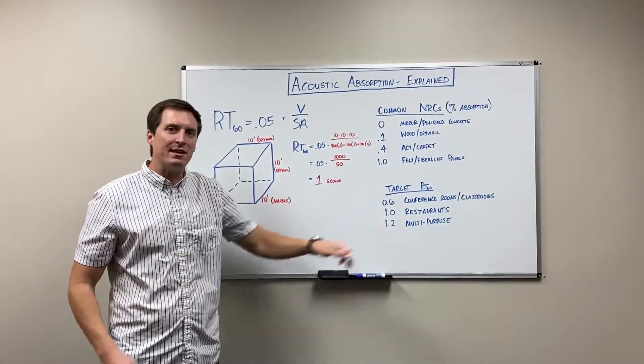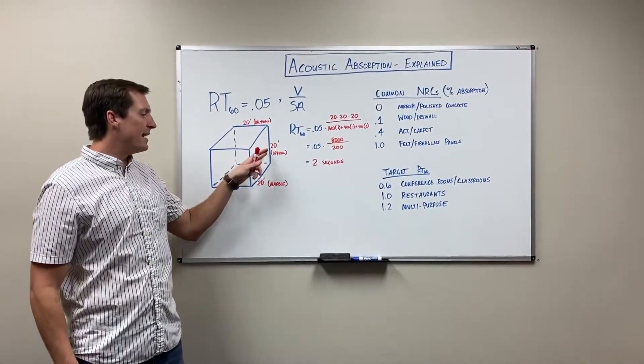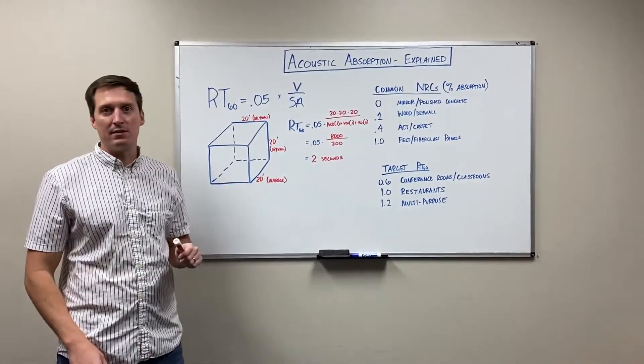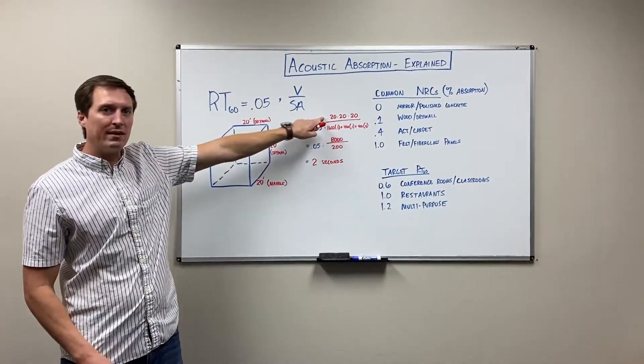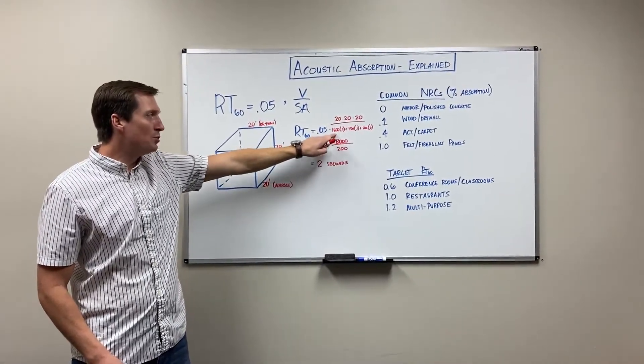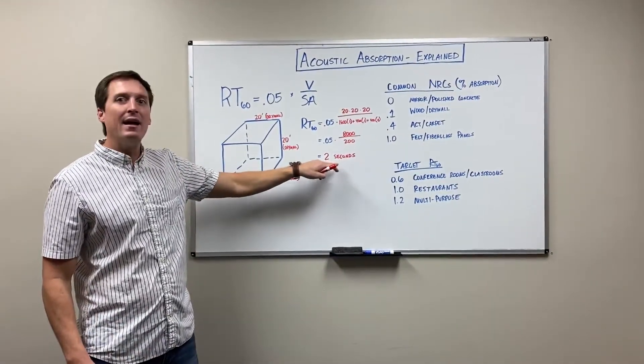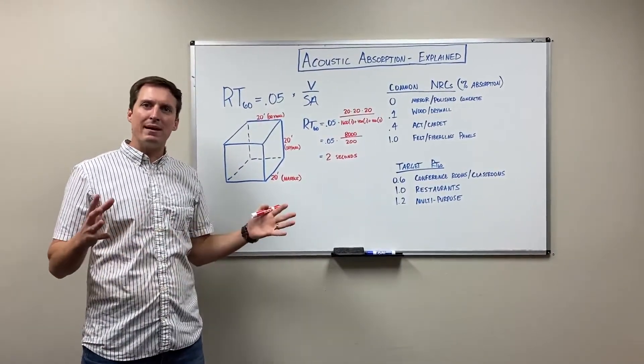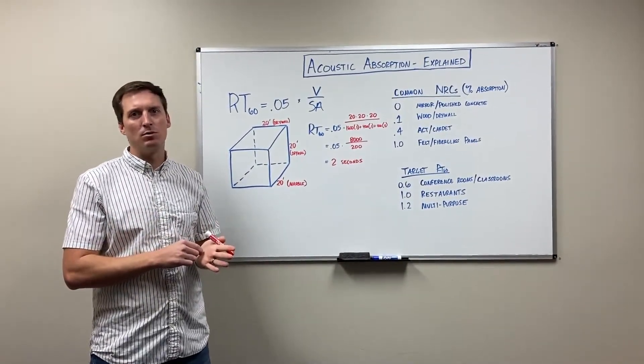All right, so here all we did was we changed the size of the room - we doubled the length, the width and the height, but didn't change any finishes. You can see how greatly that affects the reverb time. At 20 by 20 by 20 that's 8,000 cubic feet in the top, and in the denominator you do change the surface area as well, the NRC stay the same. So your overall reverb time actually increases to 2 seconds. And this makes sense - a lot of us know that in bigger spaces the echo does take longer to actually die down, and that's when acoustic treatment becomes much more critical.